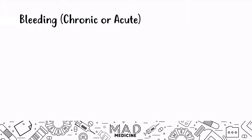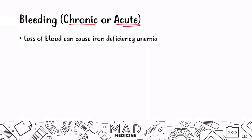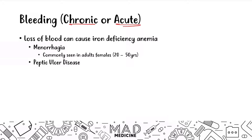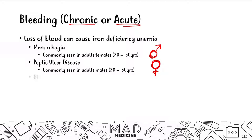You can also have iron deficiency anemia if you're losing blood. Chronic or acute bleeding can cause iron deficiency anemia. Loss of blood is most commonly seen in females going through menorrhagia, or even normal day-to-day periods, presenting typically in adult females aged 20 to 50 — and heavy bleeding during their cycle can definitely cause iron deficiency anemia. In adult males, peptic ulcer disease is one of the main causes of bleeding. GI surgery can also lead to acute bleeding, and colon cancer can lead to iron deficiency anemia as well.